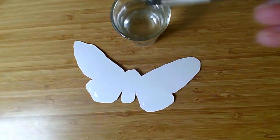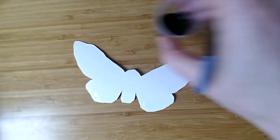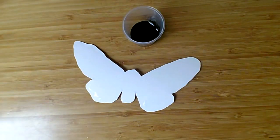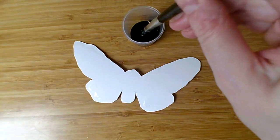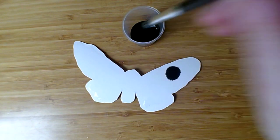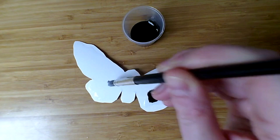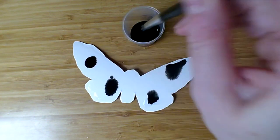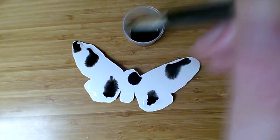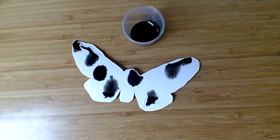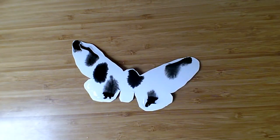And while it's still wet, get your black paint or ink. I've just got some watercolor paint here with a little water in it. And just put some blobs of paint anywhere you like on the wings. You don't need to be particularly careful or try and create a pattern. Just put them wherever you'd like to put them.